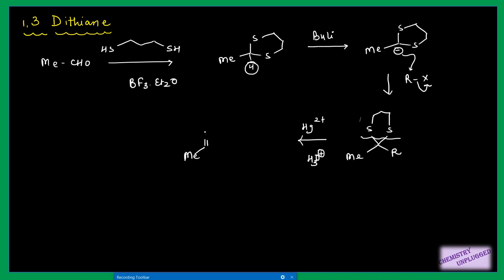The important part of this reaction is that this carbon, which is going to be electrophilic in the ketone, is now acting as a nucleophile. This process is called Umpolung, and I have already created a video on it. The basic concept involves a change in the electrophilicity of this carbon — it starts as a nucleophile and will then become electrophilic. We will mainly focus on questions from CSIR NET and GATE.